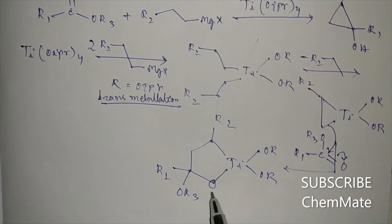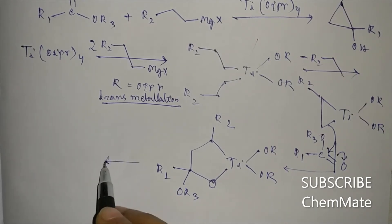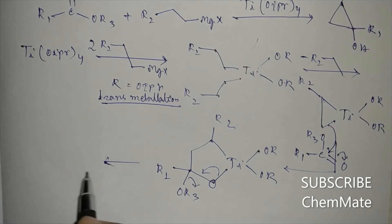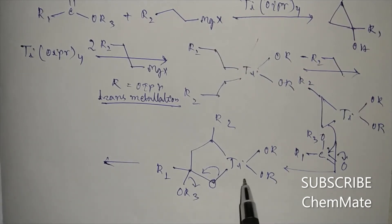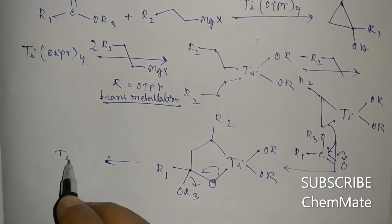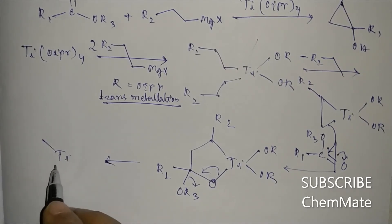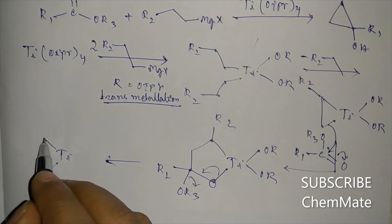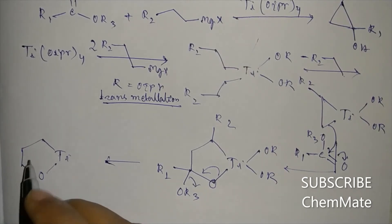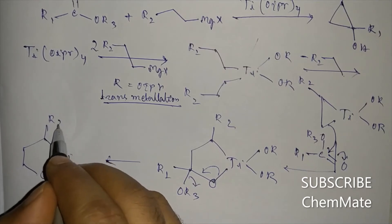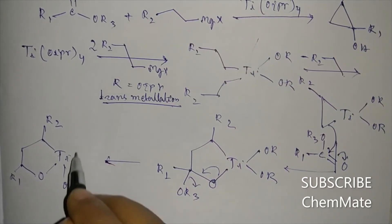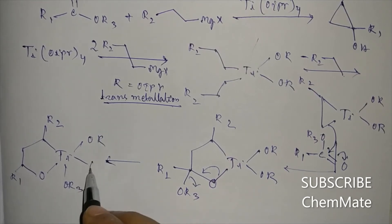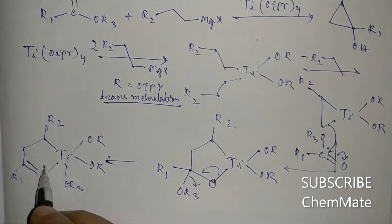The O- will be coordinated to the titanium. Then OR3 will be removed and further coordinated to titanium. So the intermediate product at this stage will contain R2, R1, OR3, with a double bond and coordination to titanium.